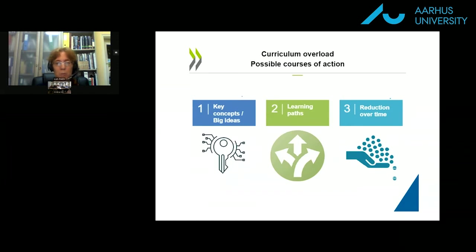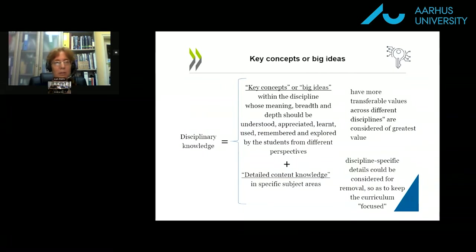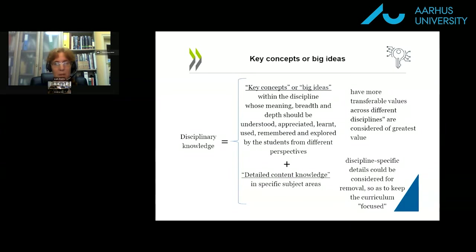When looking at the curriculum overload problem, I'd like to present three approaches. The first is key concepts and big ideas. This approach takes disciplinary knowledge and divides it into two components: key concepts and big ideas, which are the major takeaways we want students to comprehend and use throughout their lives; and detailed content knowledge. We recommend that even when facing overload, the big ideas should be retained, while detailed content knowledge can be reduced to improve the situation.